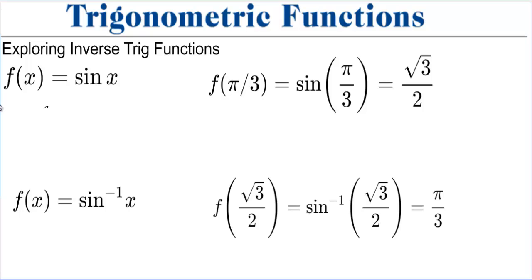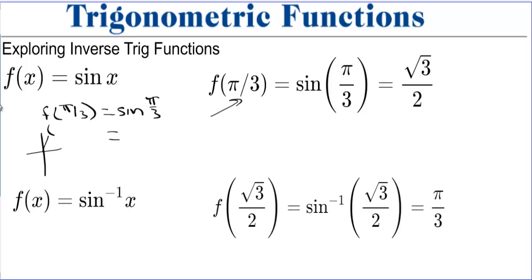If we do f of pi over 3 and evaluate that, that's equal to the sine of pi over 3. If we look on the unit circle, we have 1/2 and square root of 3 over 2. The sine is the y-value, which is square root of 3 over 2.